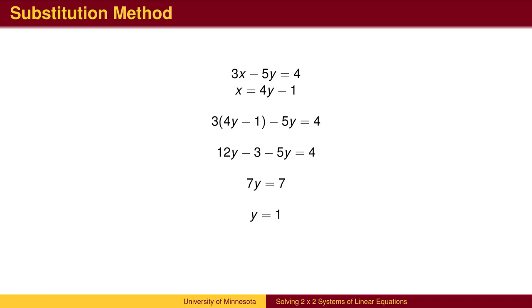This is only part of the answer. Recall we are trying to find the ordered pair where the two lines intersect. We have only found the y coordinate. We now need to find the x coordinate.